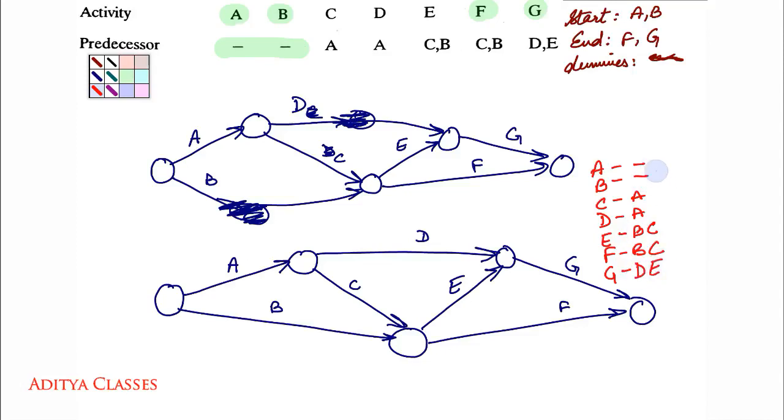So this is my predecessor relationship for this network. Now if this is correct, let us check. We have dash, dash, A, A and there is CB, CB, DE. CB, CB and DE. So this network is correct that we have made.